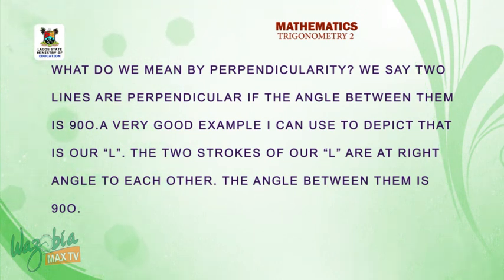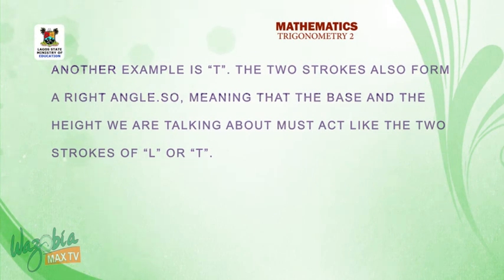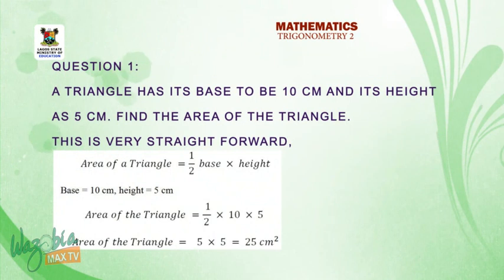A very good example I can use to depict that is our capital letter L. The two strokes of our letter L are at right angle to each other. The angle between them is 90 degrees. Another example is capital letter T. The two strokes also form right angle. I have a question here. A triangle has the base to be 10 cm and its height as 5 cm. Find the area of the triangle.